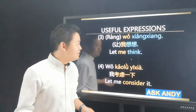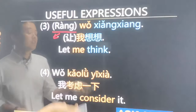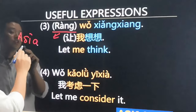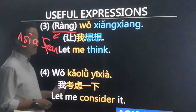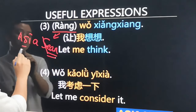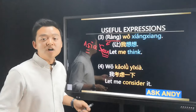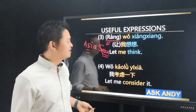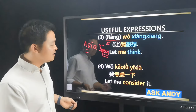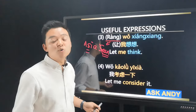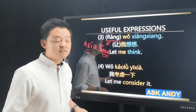Number three: let me think — 让我想想. The word 让 can be difficult to pronounce. Think of it as making an 'r' sound then 'on' — 让. If you find it difficult, you can also just say 我想想. Number four: let me consider it — 我考虑一下. 我 is I, 考虑 is consider, 一下 is for a moment. For 虑, keep your tongue in the position for 'ee' and roll your lips as if kissing. And 下 can be thought of as S-H-E-E-A-H. So: 我考虑一下.